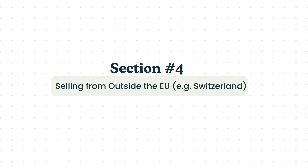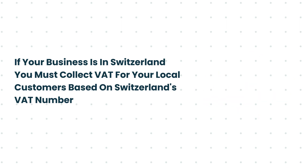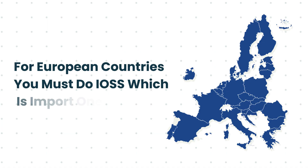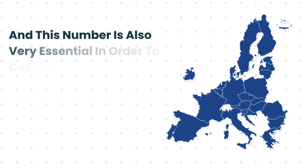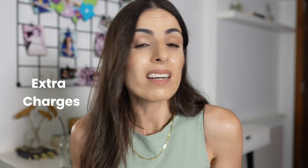Now I want to talk about a special case like Switzerland. Switzerland is a country in Europe but it is not in the European Union. If your business is in Switzerland, you must collect VAT for local customers based on your Swiss VAT number. But for EU countries, you must use IOSS — Import One-Stop Shop — which is essential to collect VAT across Europe based on each customer's country's VAT percentage. The alternative is to skip registering for IOSS and let your customers pay their duties and taxes upon delivery, which can be frustrating for customers ordering within Europe. Note that IOSS only works for orders below 150 euros, so for higher-value orders you must find another solution.